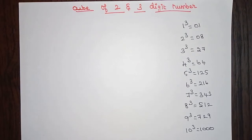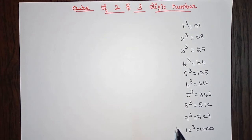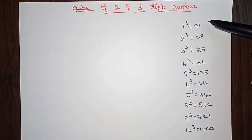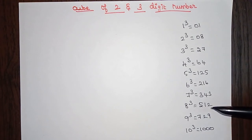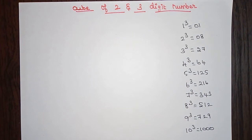Hello everyone, welcome back to my channel. Here we are going to see how to find the cube of two and three digit numbers in seconds. Before finding the cube of two and three digit numbers, we should know the cube values of single digit numbers. We should keep those in mind for finding the cube of two and three digit numbers.